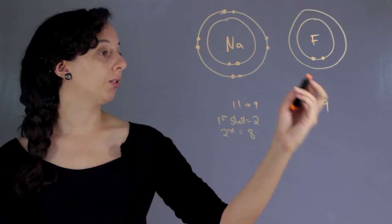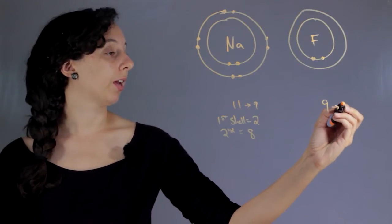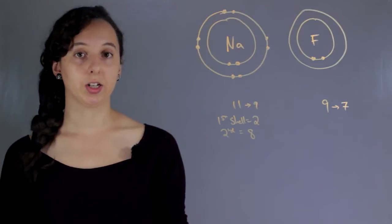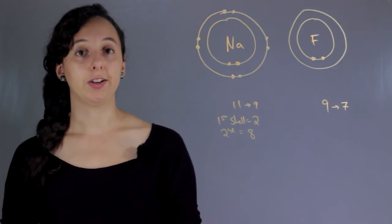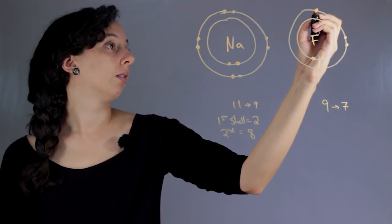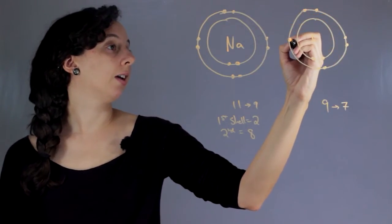And now we have fluorine. So we already used 2, so now we're down to 7. And so we're just going to put all of them in this second shell. You can tell we're not going to fill it. So 1, 2, 3, 4, 5, 6, and 7. And we're done.